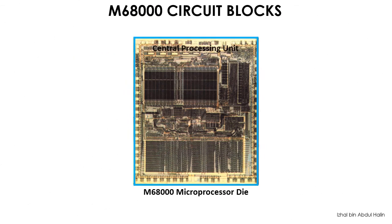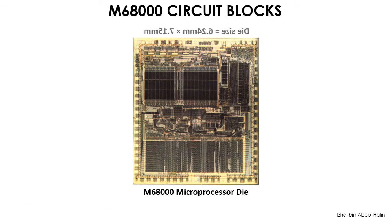This picture shows the actual silicon implementation of the 68K microprocessor. The die size is approximately 6.24 by 7.15 square millimeters — it is so small that you can place it on a coin. Let's take a closer look at this picture and see if we can identify the circuit blocks explained in the previous slide.